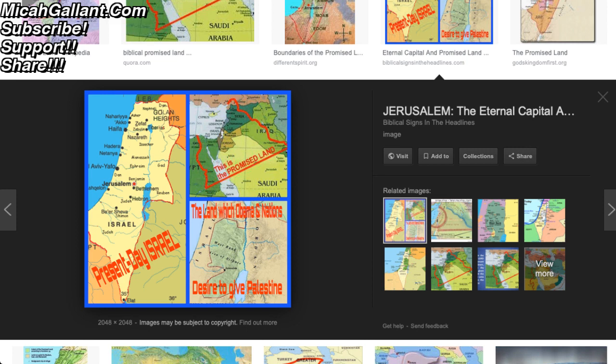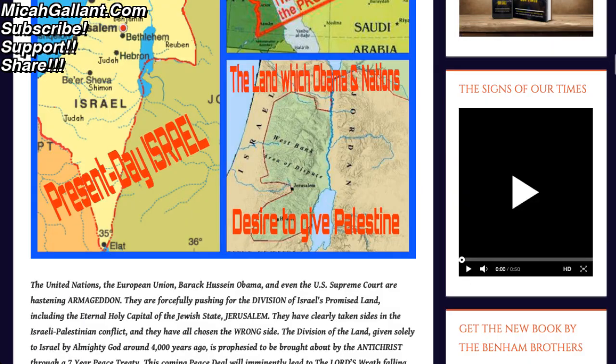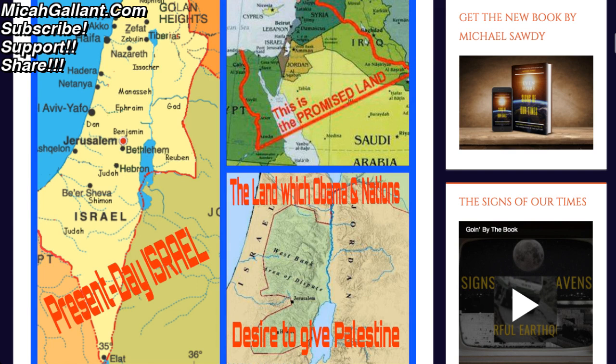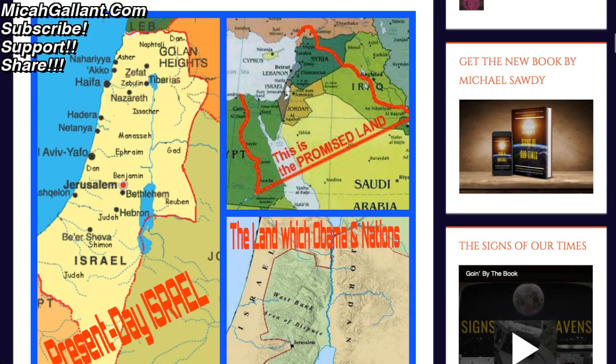When you zoom out and look at the full-size image, you can see that the promised land is a huge area. These are the original borders described in Genesis and Joshua. Israel right now doesn't control a large part of that. And what the peace deal wants to do is cause Israel to own even less than what they own now — which is just a small slice of the promised land up in the top right corner.